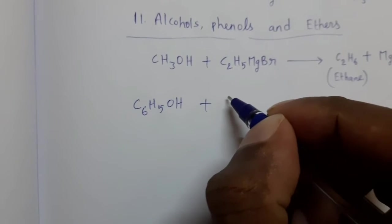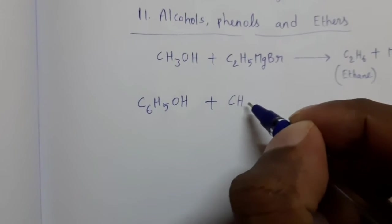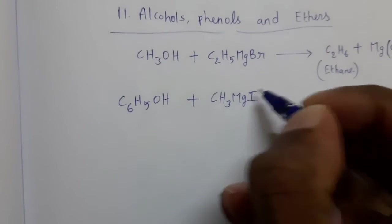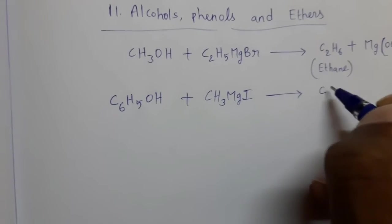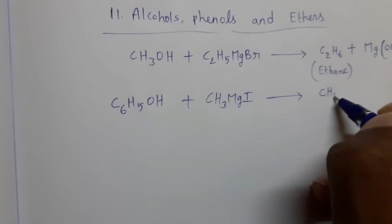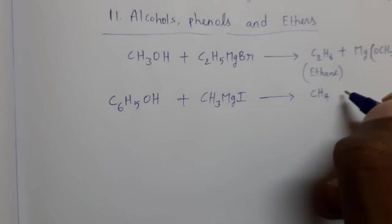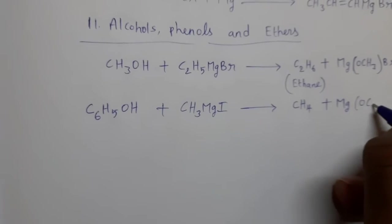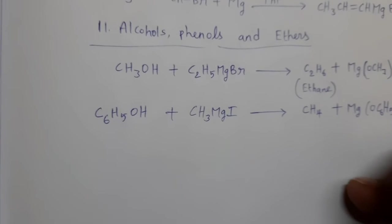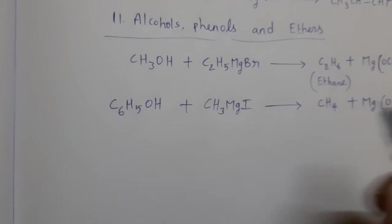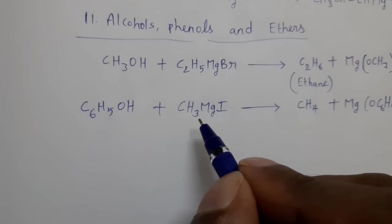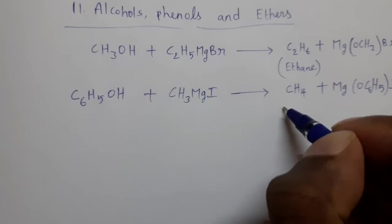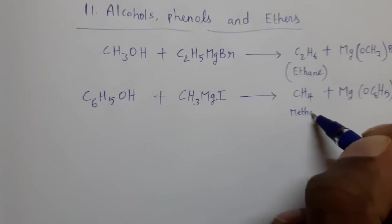Phenols also react with Grignard reagents. For example, C₆H₅OH reacts with CH₃MgX. Since a methyl group is present in the Grignard reagent, we get methane (CH₄) as the alkane product. In this way, alcohols and phenols react with Grignard reagents to form corresponding alkanes.